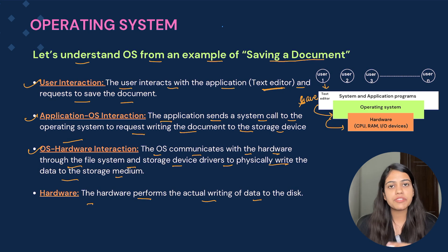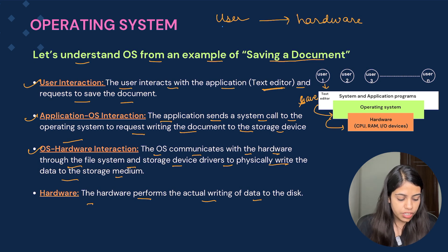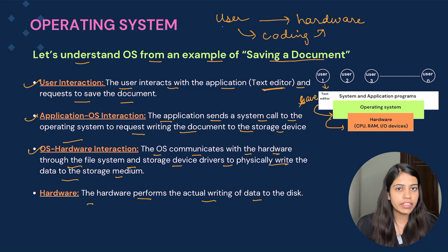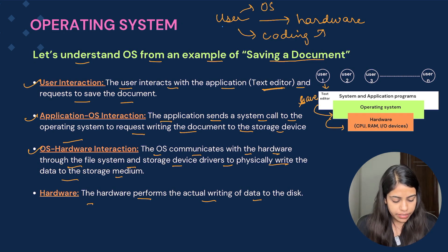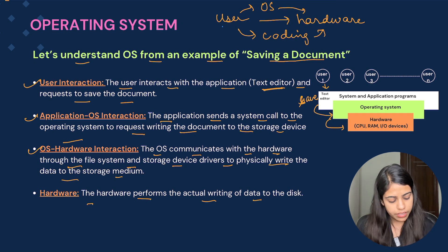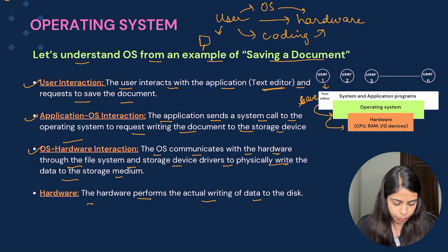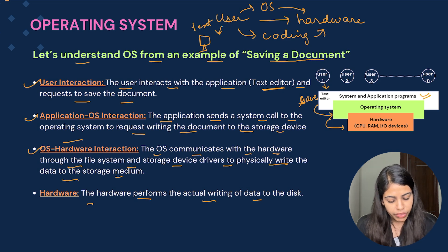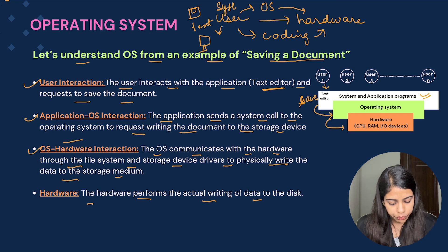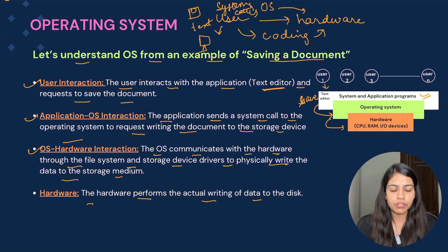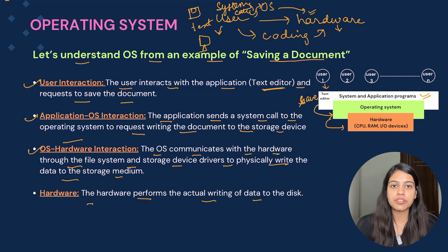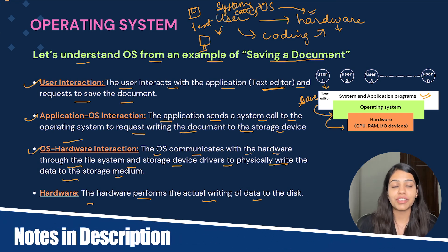To summarize: there is a user who wants to execute a task. The user can't directly go to the hardware because that would require coding for every call — saving, printing, etc. — which is very tedious. So the user goes to the operating system, and the operating system handles communication with the hardware. The user opens the laptop, goes to the text editor, writes content, hits save, which generates a system call to the OS. The OS communicates with the hardware, which looks for available resources and memory and performs the saving of the document.